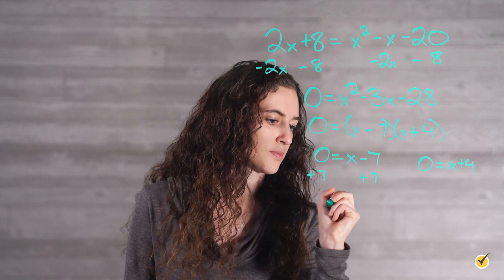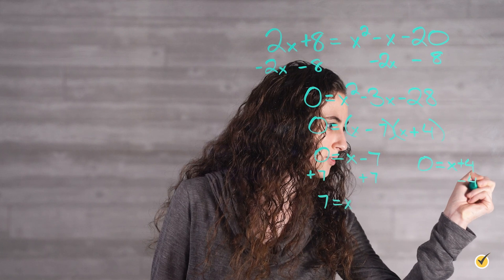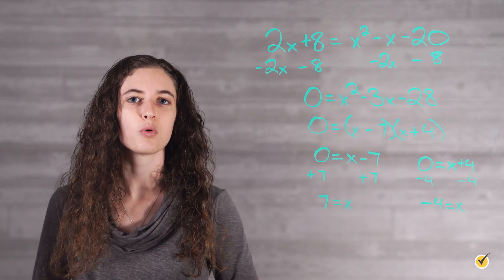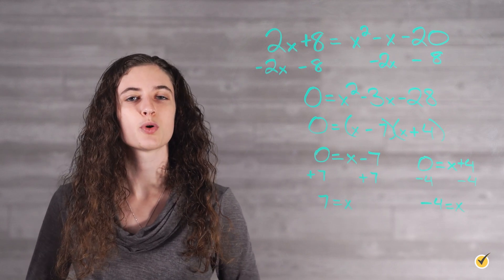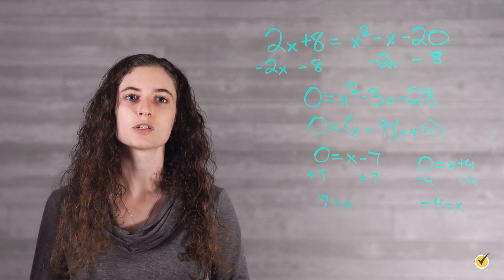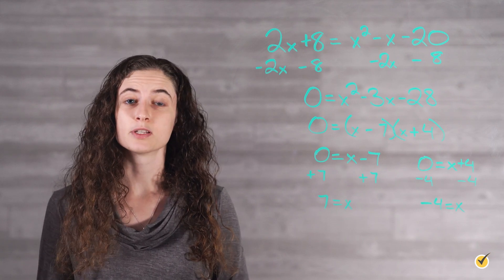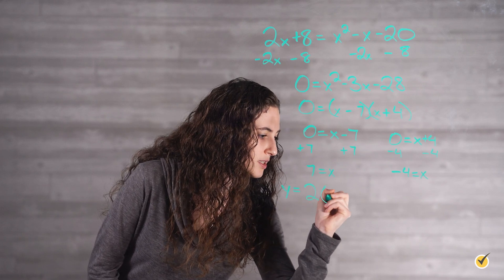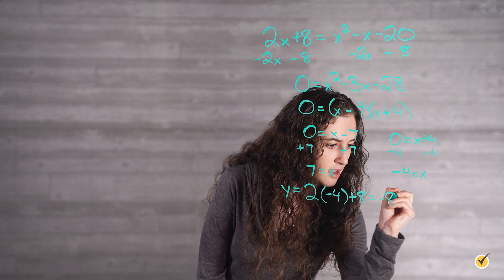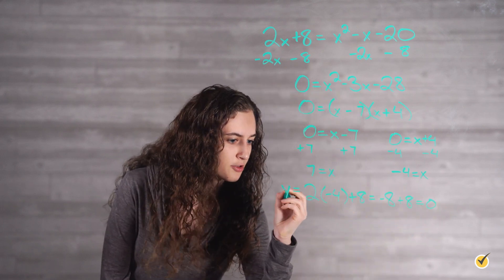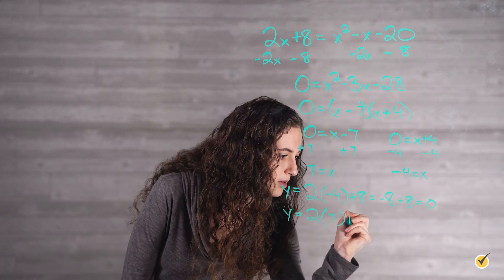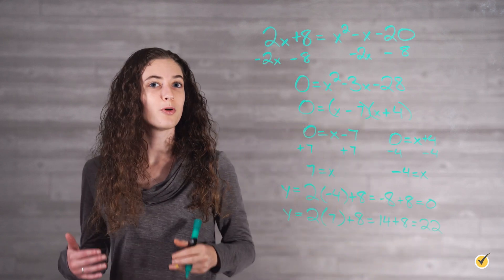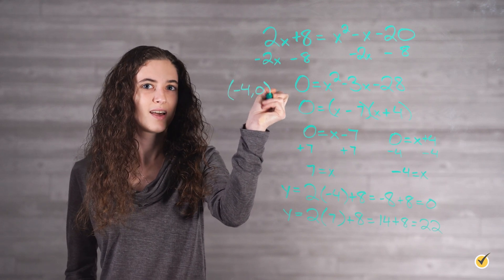Now we can add 7 to both sides and get that x is equal to 7, or subtract 4 from both sides and get that x is equal to negative 4. This tells us that our zeros for the quadratic equation are negative 4 and 7 — these are our values for x at the two points where our graphs intersect. To find our y values for each of these points, we simply plug our x values into either equation and solve for y. I'm going to plug them into the linear equation because it will require fewer steps. So y equals 2x plus 8: 2 times negative 4 plus 8 gives us negative 8 plus 8, which is 0. And if we plug in our other value for x, we get y equals 2 times 7 plus 8 equals 14 plus 8, which is equal to 22. So our points of intersection are negative 4, 0 and 7, 22.